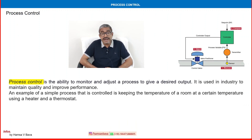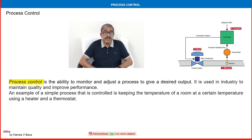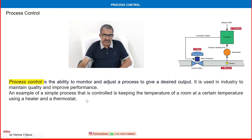We have discussed process control many times in detail in various videos. Here we are discussing some advanced process control topics like smart valves, control valves, and digital positioners. You can see here a sensor, transmitter, controller, and control valve as part of the control system family. Process control is the ability to monitor and adjust a process to give a desired output. It is used in industry to maintain quality and improve performance. A simple example is keeping the temperature of a room at a certain level using a heater and a thermostat.